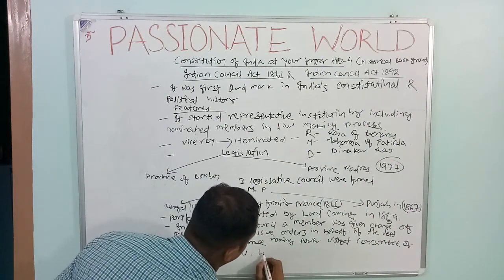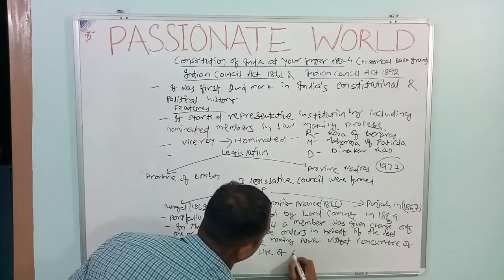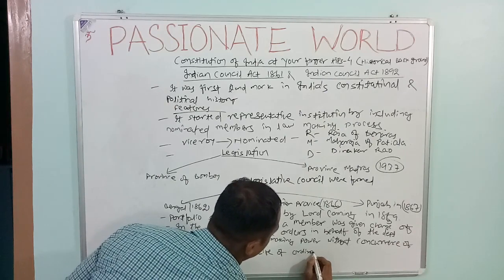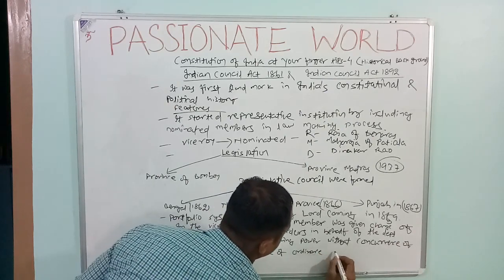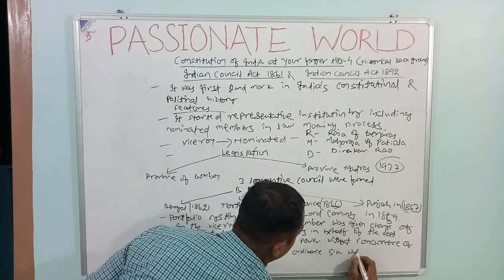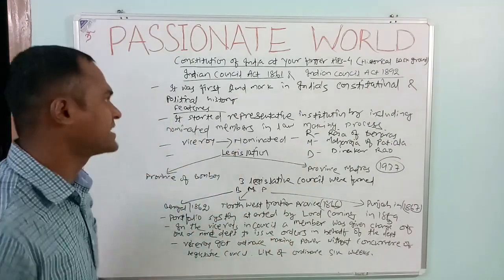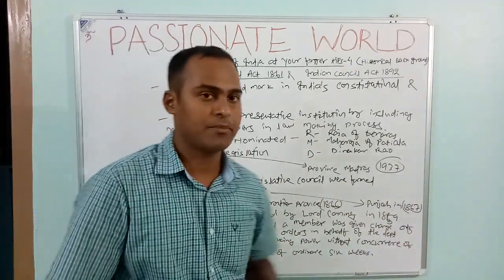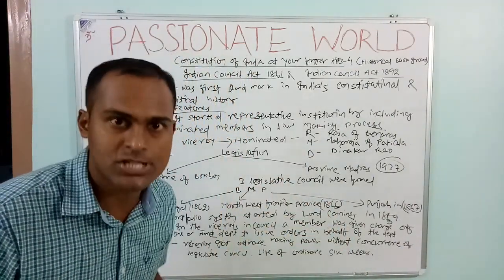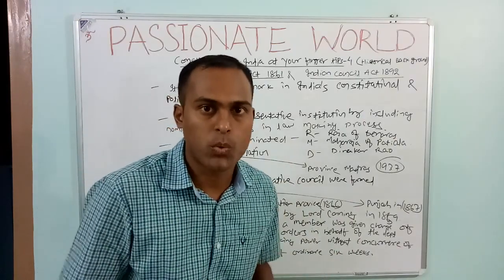The Viceroy was given ordinance-making power without the concurrence of the Legislative Council. The life of such an ordinance was six weeks.